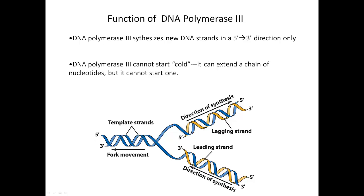Here is a replication fork. The double-stranded DNA is on the right, and the two strands that have separated are shown in blue. As replication occurs, this will continue to unwind to the left. One of these strands can form in a continuous manner — this is the leading strand. The new strand is anti-parallel to the old strand, so the old strand goes 5' to 3' from left to right, and the new strand is synthesized from right to left, continually toward that replication fork. As those DNA strands open, you just synthesize more at the end.